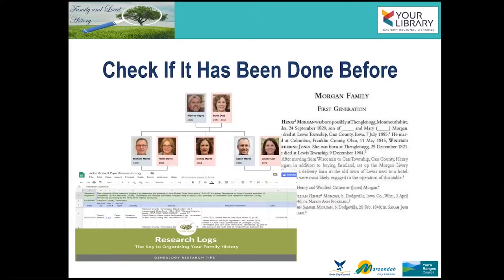But before you reinvent the wheel, check whether it's been done before. Use Google to look for family trees — you may be surprised at what you find. This may give you the opportunity to get in touch with other family members and researchers. But also be very wary of information provided; check for primary and secondary documents as proof, as it's easy to be led astray with one wrong fact. You may also wish to take out a subscription to a database such as Ancestry or MyHeritage to find other researchers to exchange information with.